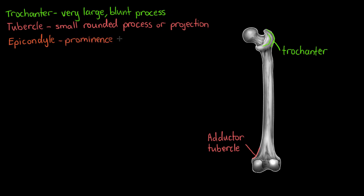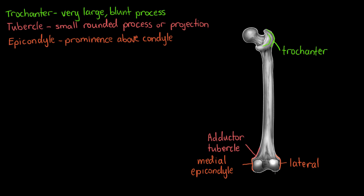Moving on to the epicondyle — an epicondyle is a prominence that sits above a condyle. Looking at the medial and lateral sides of the femur, we can see two epicondyles named based on their position: the medial epicondyle and the lateral epicondyle. The condyle that these epicondyles sit above is not a bone marking related to muscle or ligament — it is actually related to joints, so we will discuss that in a different video.